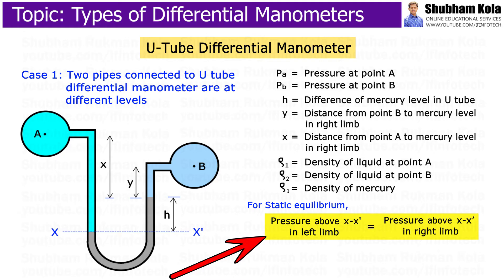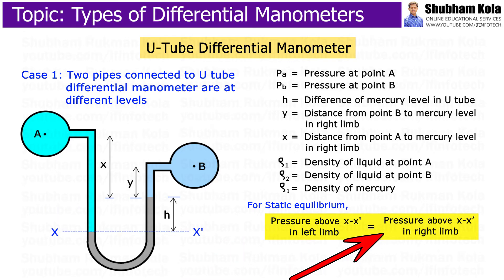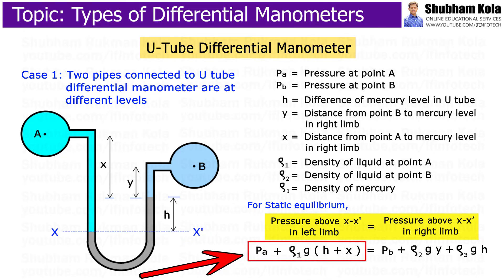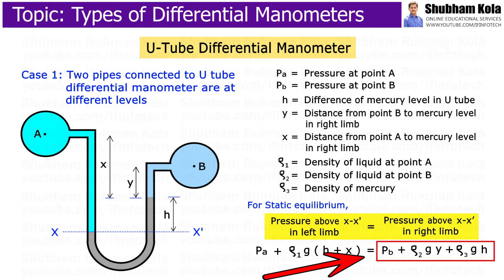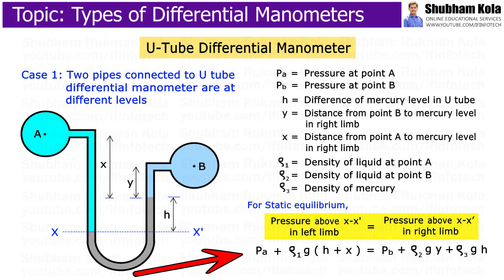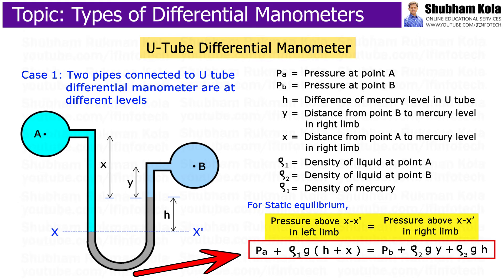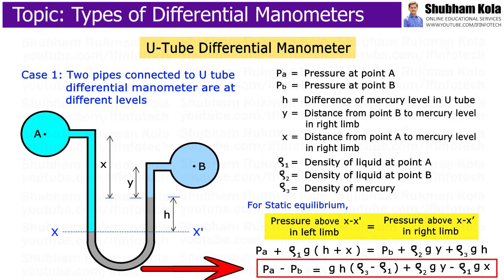By using static equilibrium, pressure above datum line in the left limb equals pressure above datum line in the right limb. Therefore, pressure in the left limb equals PA plus Rho 1 times g times (h + x), and pressure in the right limb equals PB plus Rho 2 times g times y, plus Rho 3 times g times h. After simplifying this equation, we get the difference of pressure at A and B.